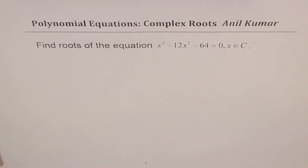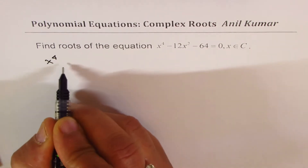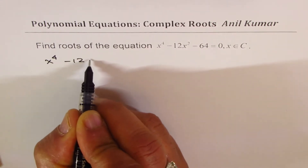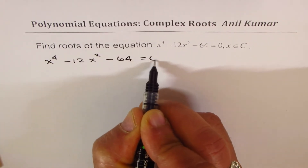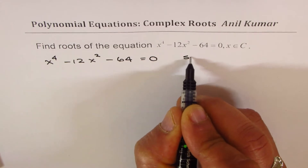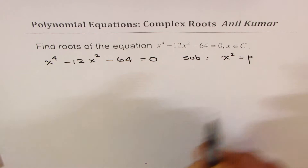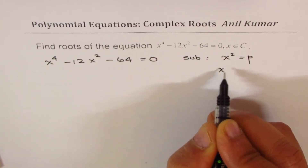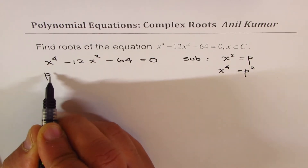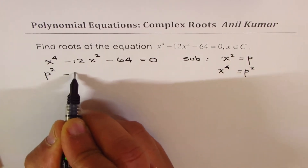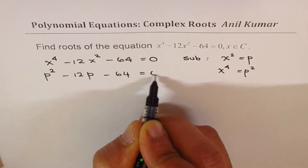So let's rewrite the question. It is x to the power of 4 minus 12x squared minus 64 equals to 0. Now let's do a substitution. We'll substitute x squared as p. So that means x to the power of 4 is going to be p squared. So we can replace this with p squared minus 12p minus 64 equals to 0.